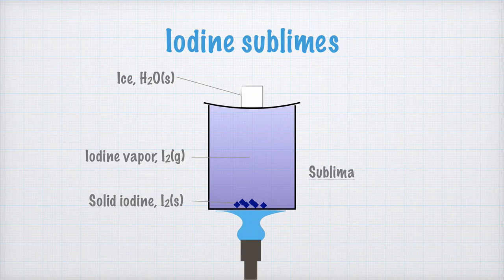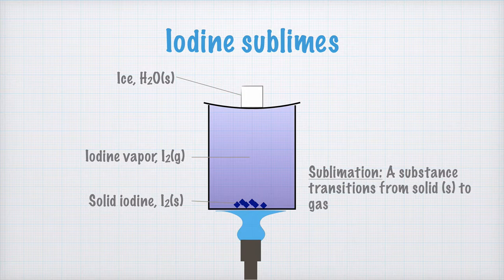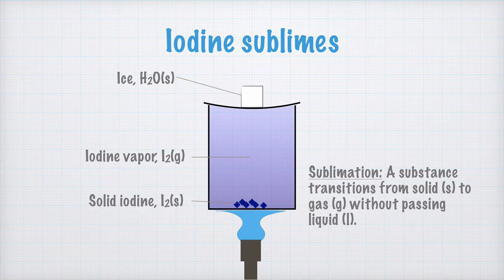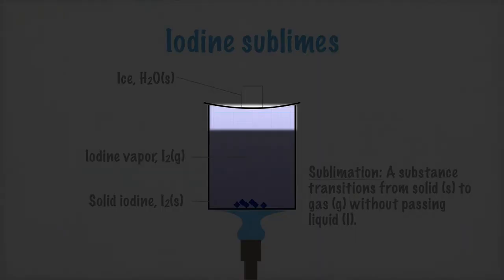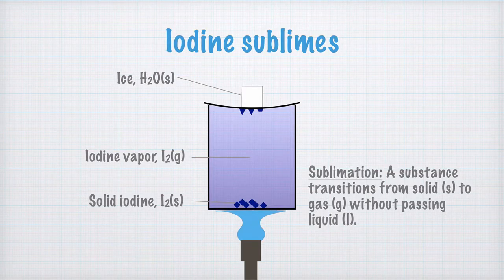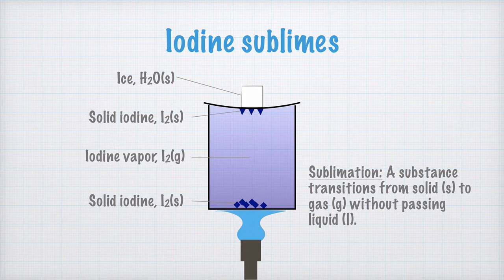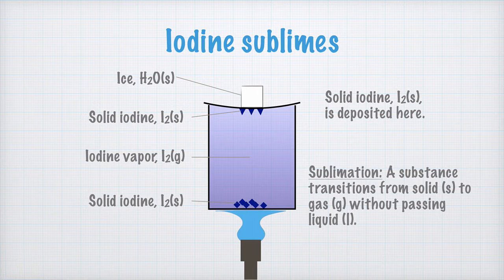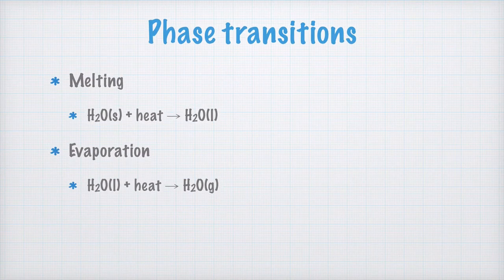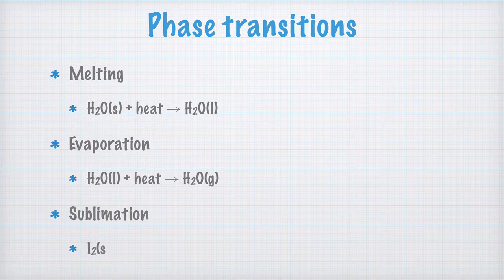Write this too, that sublimation is when a substance transitions from solid to gas without passing liquid. On the watch glass up here, solid iodine is reformed. We write that solid iodine, I2S, is deposited here. So we add to our examples of phase transitions that an example of sublimation is when solid iodine, I2S, is heated, forming iodine vapor, I2G.